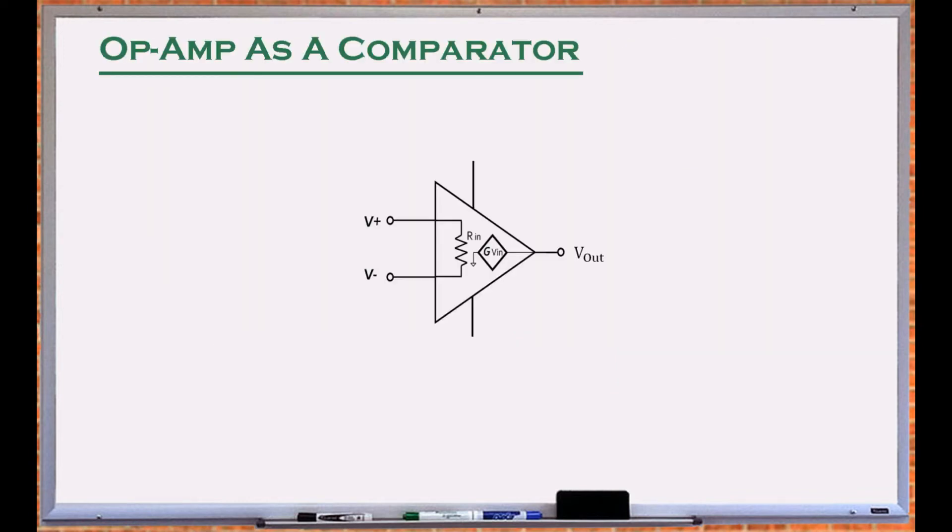An amplifier with an open-loop gain of 100,000, positive and negative 5 volts supply voltages, having a 1 volt triangular signal at its positive input, with its negative input connected to ground, outputs a signal that looks like a square wave.